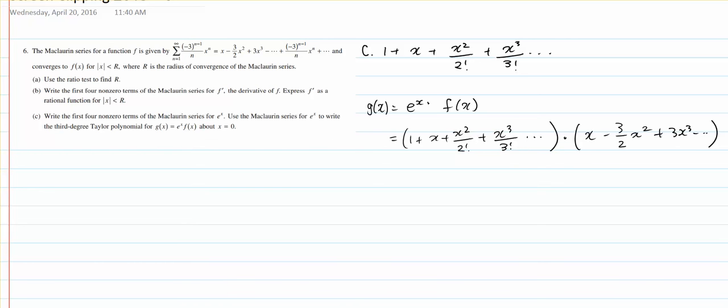And that cancels to x minus 1 half x squared plus 2 x cubed plus, and it goes on. So, the 3rd degree Taylor polynomial would be x minus 1 half x squared plus 2 x cubed.